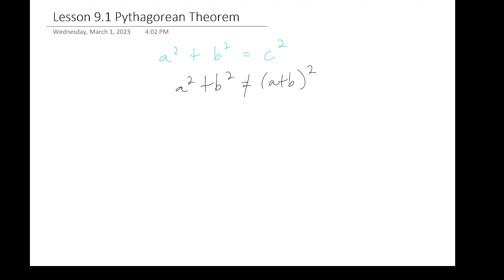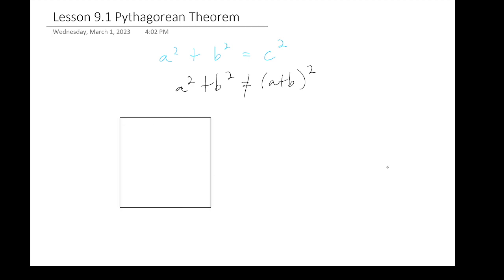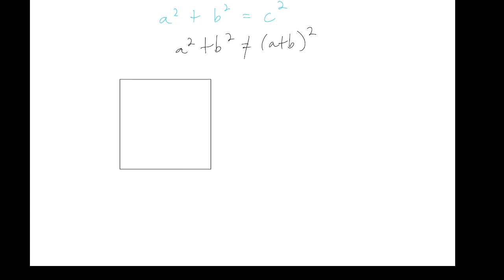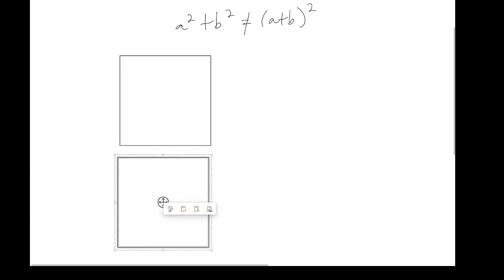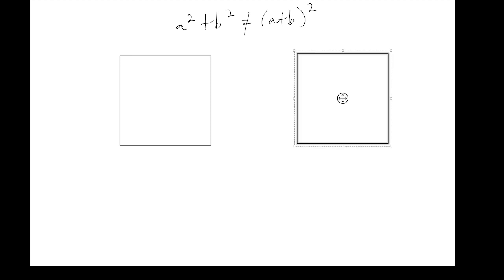I'm going to do a little combo graphical slash algebraic proof with you guys right now as we take a look at this. We're going to take two squares side by side. First and foremost, we have figure one. I'm going to subdivide both of these figures. They're identical squares, so we should know that the two areas are going to be the same. But we're going to subdivide them in the following way.